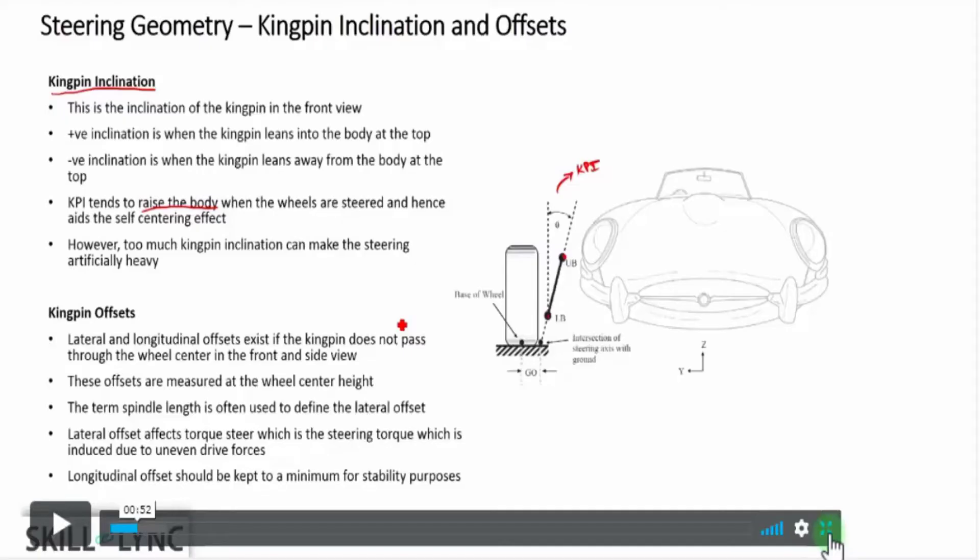Now the angle that the kingpin axis makes with the vertical is called as caster angle when you're looking at the car from the side view, correct? Now when you're looking at the car from the front view, that is basically called kingpin inclination.